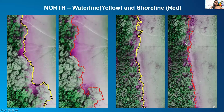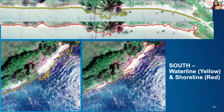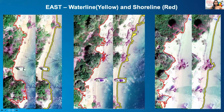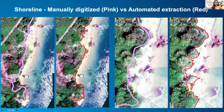In detail, this is the output for the north region, whereas for south it looks like this. Here we can clearly visualize the results of shoreline and waterline in yellow and red. The pink line shows the manually digitized shoreline, whereas in red you can see the perfect demarcation of the shoreline.